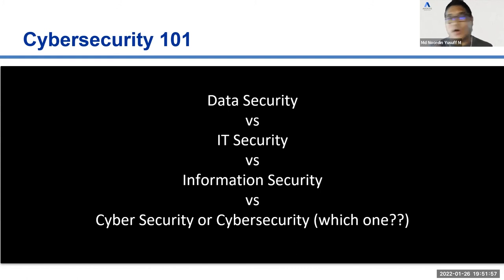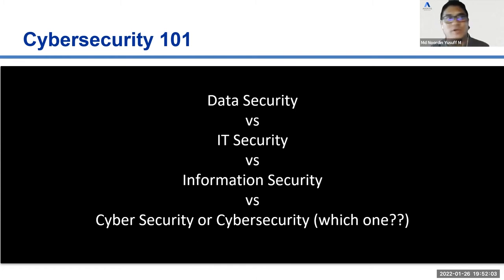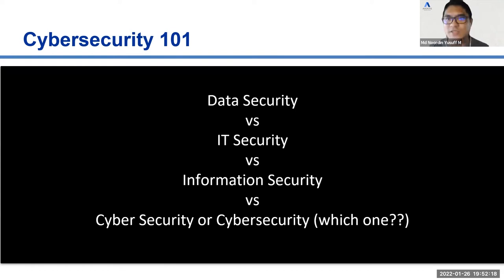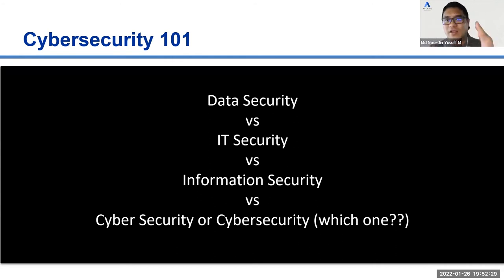Information security followed because data is a form of information, and there was information lying everywhere — in servers, routers, security devices. Then cybersecurity came along because there were a lot of external hackers on the internet, and since all of us are accessing the internet, we needed to protect against them entering — hence the term 'cyber security.'